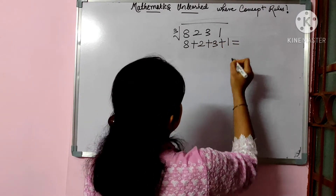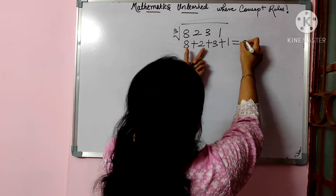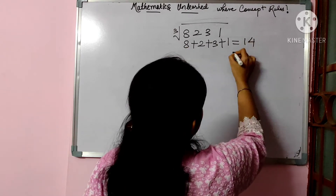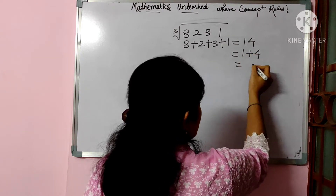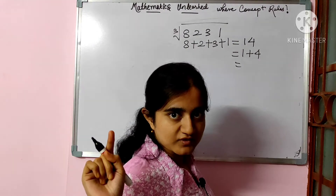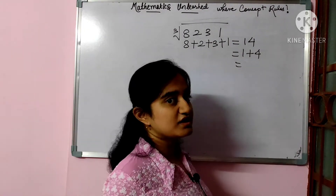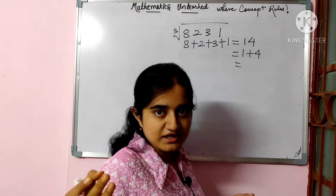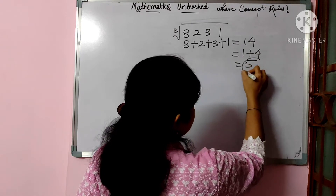For example, the number 8231 — in digits ko add karna hai. 8 plus 2 plus 3 plus 1: 8 plus 2 is 10, plus 3 is 13, plus 1 is 14. Now we add again: 1 plus 4 is 5. Hume usko reduce karke 1-digit number pe lana hai, yani 0 se 9 ke beech. So the digital sum is 5.